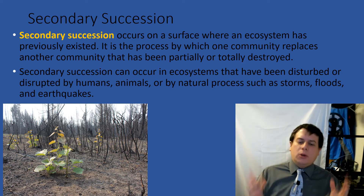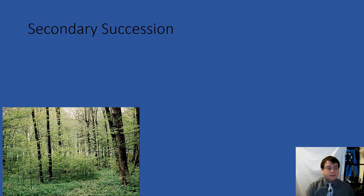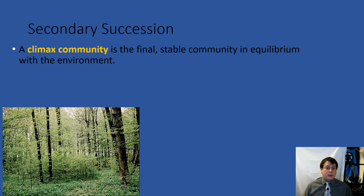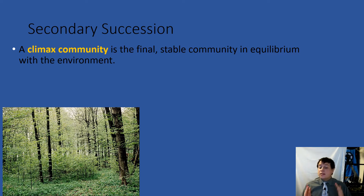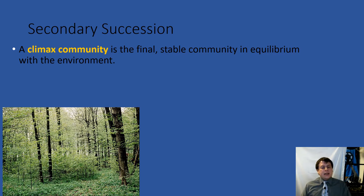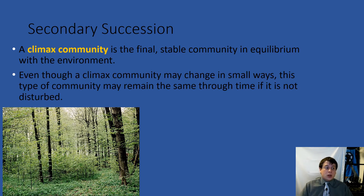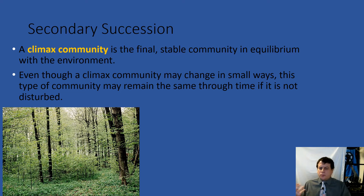What is a climax community? A climax community is the final stable community in equilibrium with the environment. That picture over here is an oak forest — the oak forest in this state is essentially what it's going to be, and it can actually develop into something called an old growth forest. It's not just oak forest; there can be a lot of different climax communities. The idea is that the mixture of species here, if left undisturbed, is going to be the same forever. It may change in small ways, but it's not really going to massively shift — it's not going to become a grassland or anything like that.